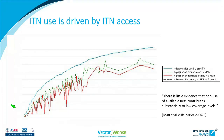ITN use is driven by access. The red line — percent of the population using an ITN — tracks very closely with the green line, which is population access. The red line is ITN use and the green line is the percentage of people that could use an ITN, and these are very close as coverage goes up.